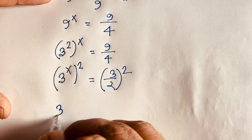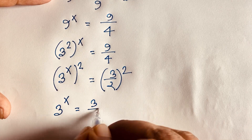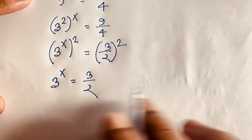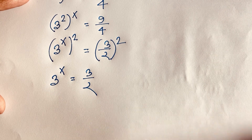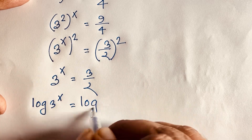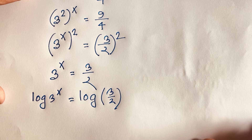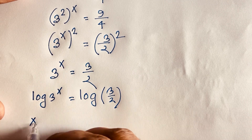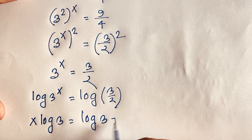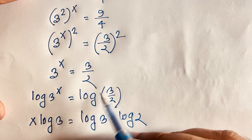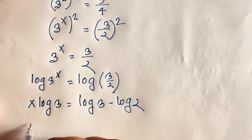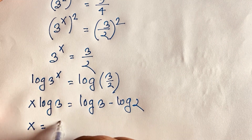Now to find the value of x in this exponential expression, we use logarithms. Taking log of both sides: log(3^x) equals log(3/2). The exponent moves to the front: x times log 3 equals log 3 minus log 2, using the logarithm law that log(a/b) equals log a minus log b.